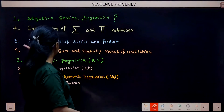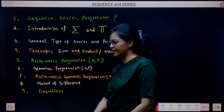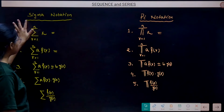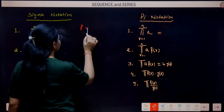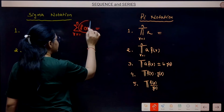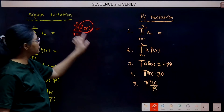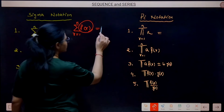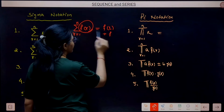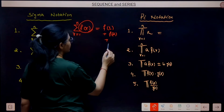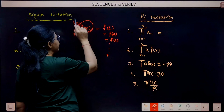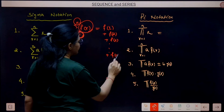Now, introduction of sigma and pi notation. When we write sigma of A(r), r from 1 to n, we substitute r = 1, then r = 2, then r = 3, and so on, adding each result. R is the varying quantity, the lower limit is its starting value and the upper limit is its ending value. This is the meaning of sigma notation.